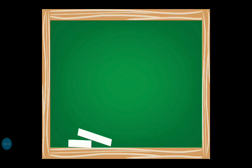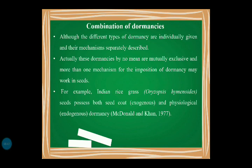Moving on, there is also a combination of dormancies. Although different types of dormancy are described individually with separate mechanisms, they are by no means mutually exclusive — more than one mechanism may operate in a single seed. For example, Indian rice grass (Oryzopsis hymenoides) possesses both seed coat (exogenous) and physiological (endogenous) dormancy. This was reported by McDonald and Khan in 1977 — an important point often asked in examinations.